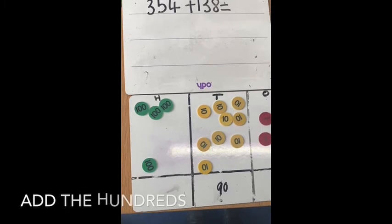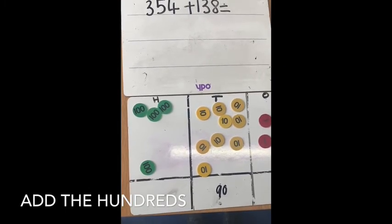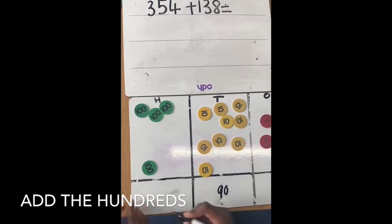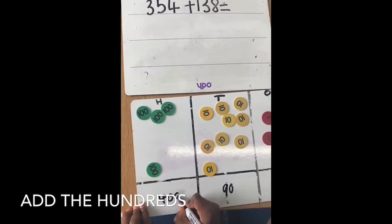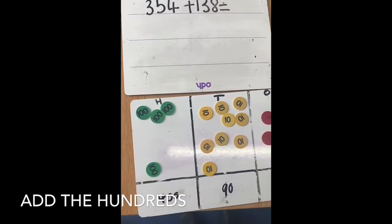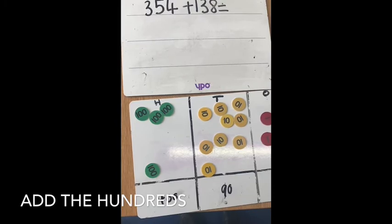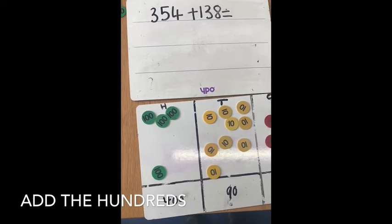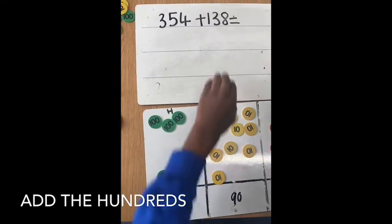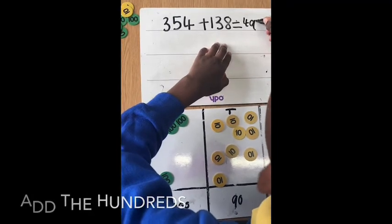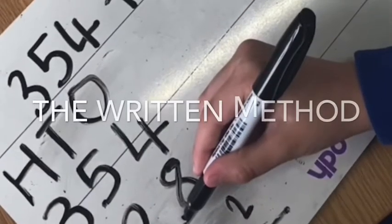Finally, the hundreds: 300 plus 100 equals 400. 354 plus 138 equals 492.